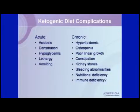Why wouldn't we always use diet first? It's because of the lifestyle changes for the family, and also because, like medications, diet therapies have serious consequences and complications. I usually divide the complications of ketogenic diets into acute — things that can happen right away — and chronic complications that can occur over time.